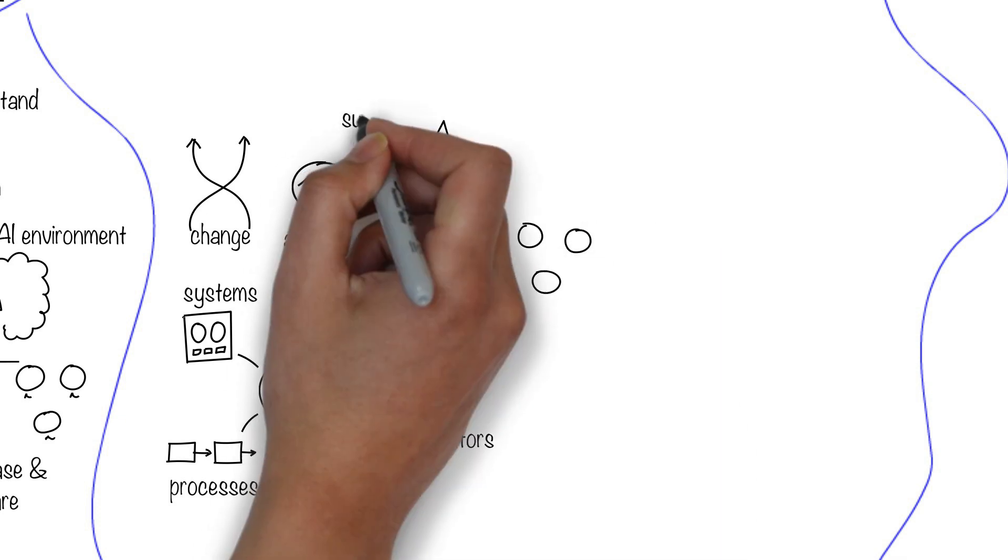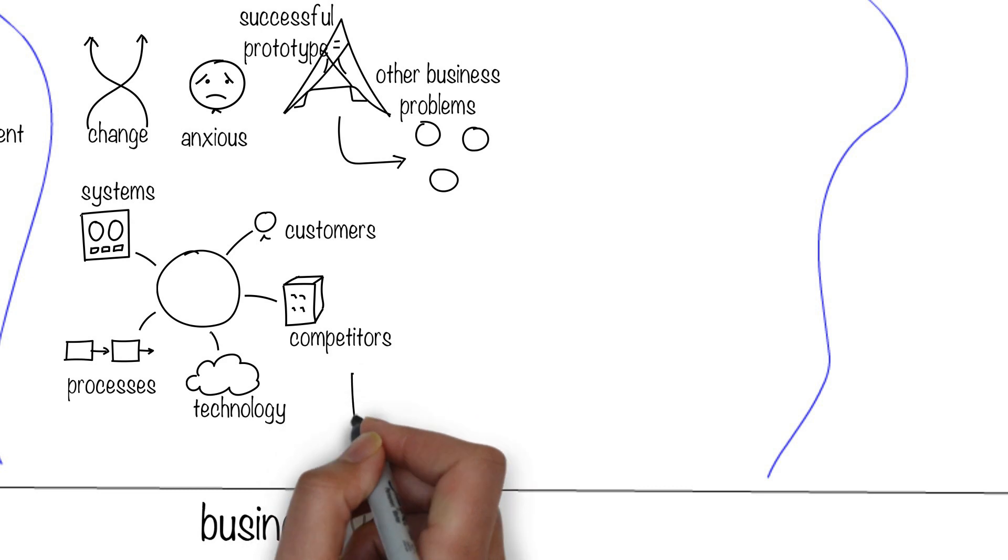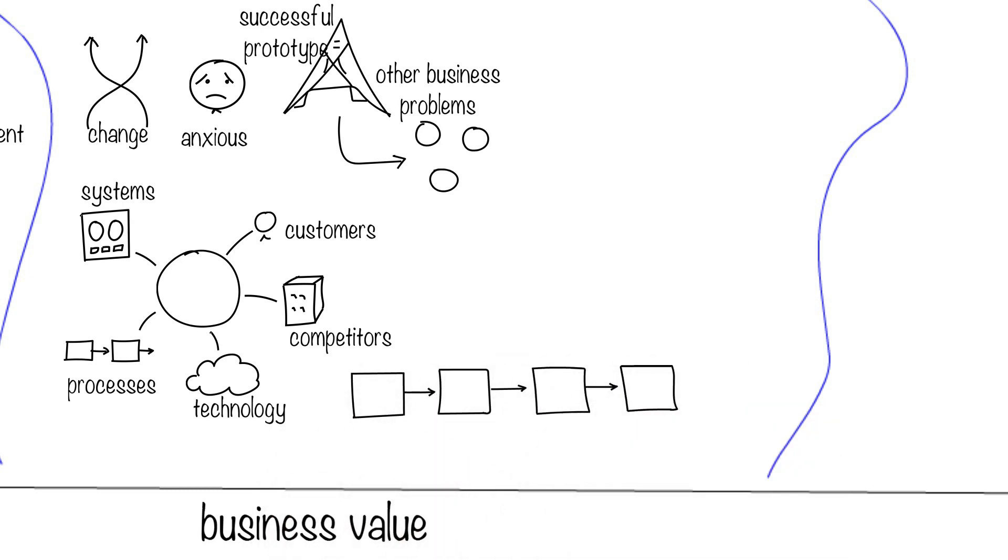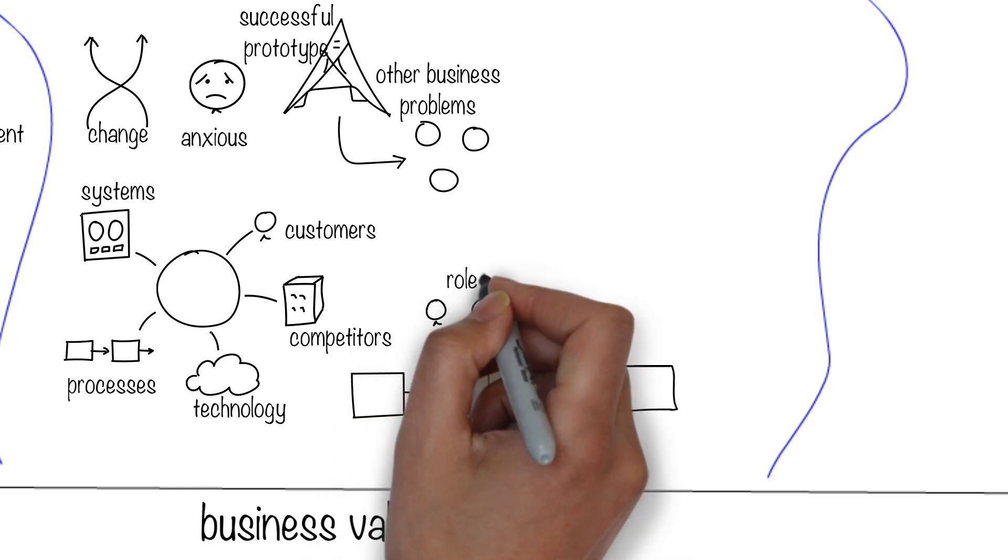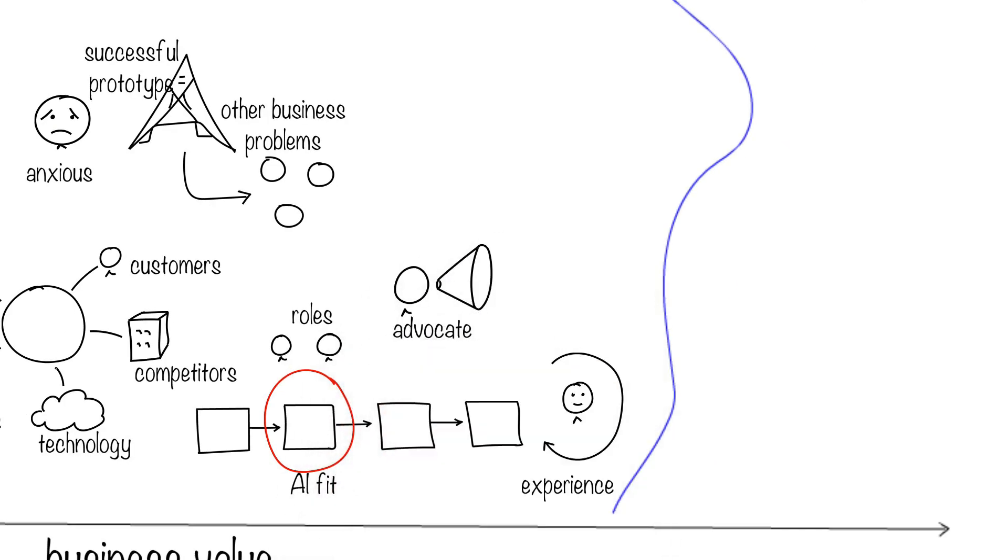Use your successful prototypes to experiment with other business problems. Model current processes to understand where AI fits. Understand employee roles that'll change and how customer experiences can become remarkable. Be the advocate for change. Share wins with your leaders.